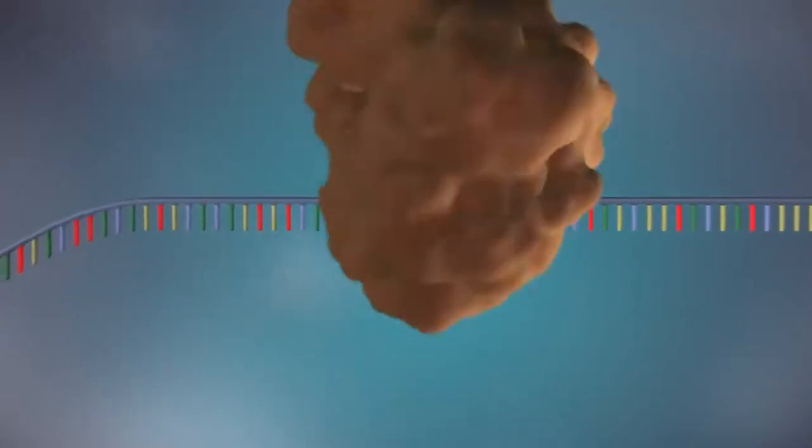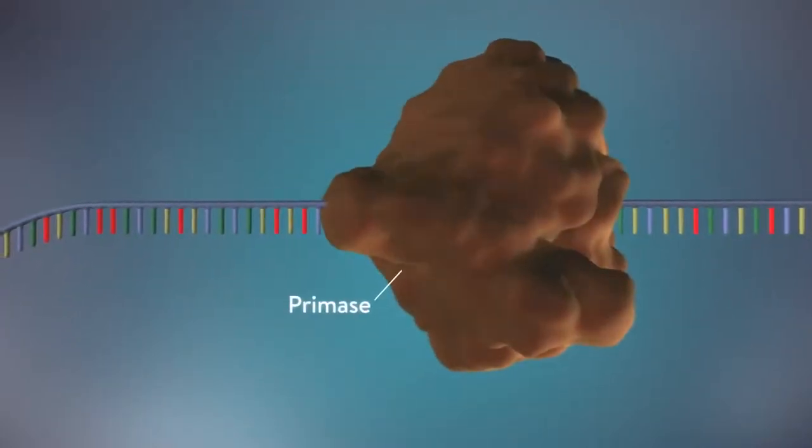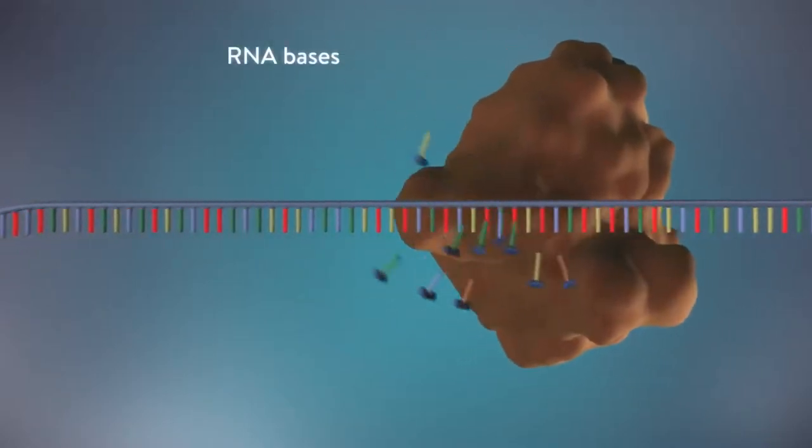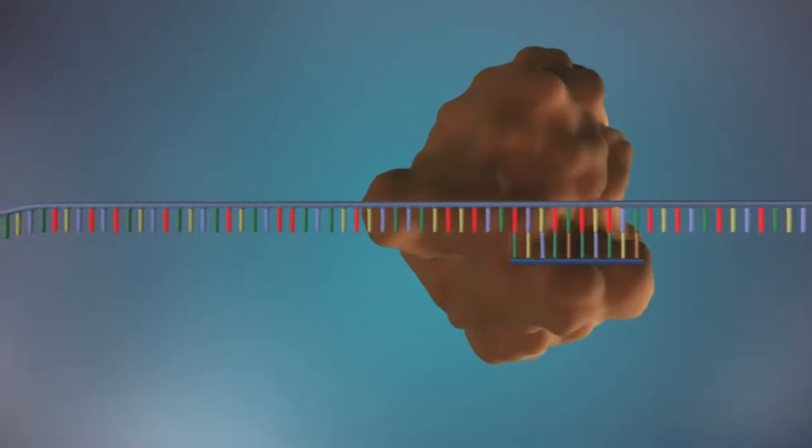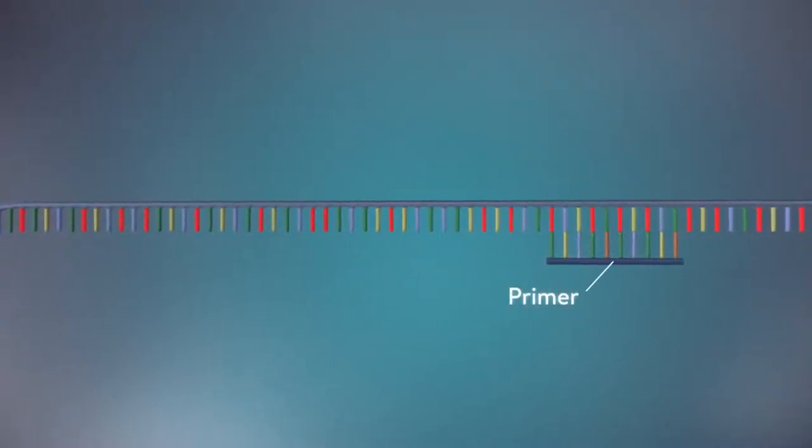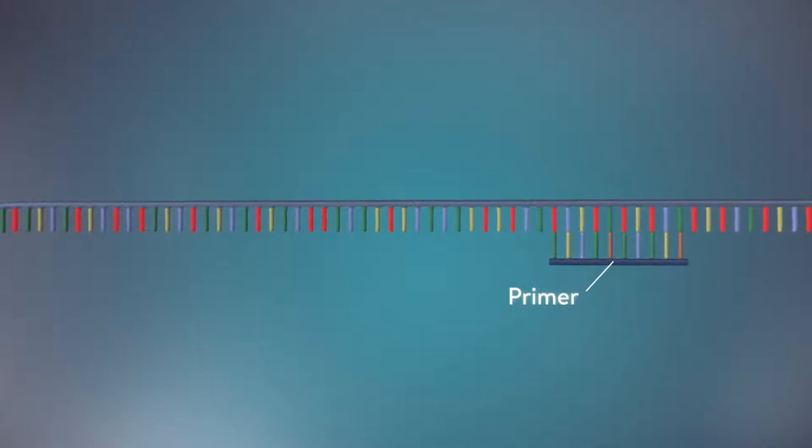An enzyme called primase starts the process. This enzyme makes a small piece of RNA called a primer. This marks the starting point for the construction of the new strand of DNA.